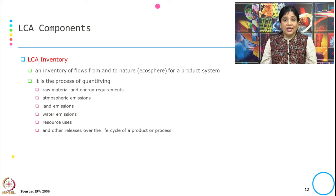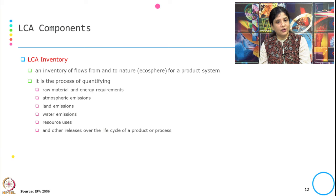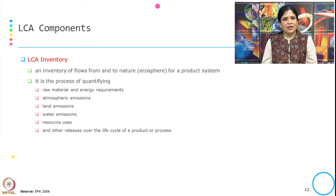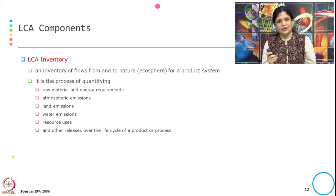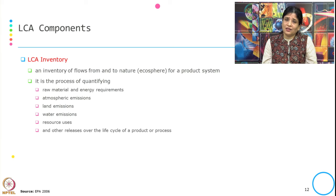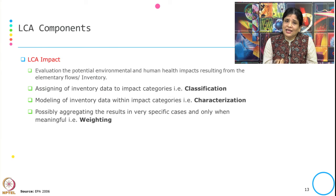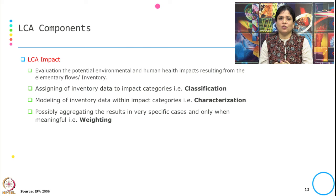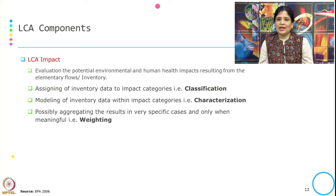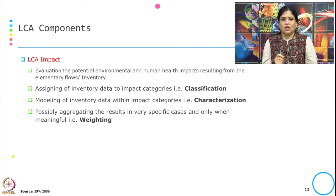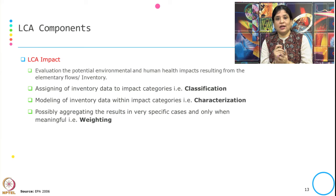In the LCA inventory, a flow from and to nature for the product system is quantified — covering raw material and energy requirements, atmospheric emissions, land emissions, water emissions, resource use, and all other impacts created in the product's life cycle. In the impact assessment stage, three things happen: classification — assigning inventory data into impact categories; characterization — modeling inventory data within the impact category; and weighting — aggregating results in specific cases where it is meaningful.